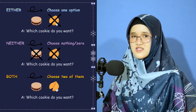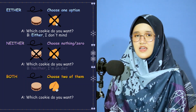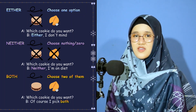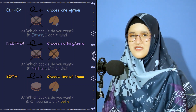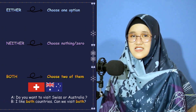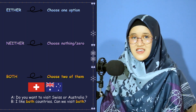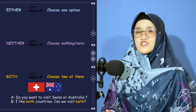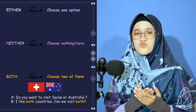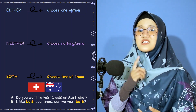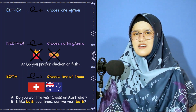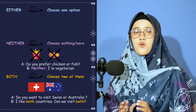Which cookie do you want? 'Either' — I don't mind. 'Neither' — I'm on a diet. Of course, I pick 'both.' Let's try another example: Do you want to visit Switzerland or Australia? 'I like both countries, can we visit both?' 'Both' in this sentence means that you like the two options that were given and you would like to do both activities instead of choosing just one.